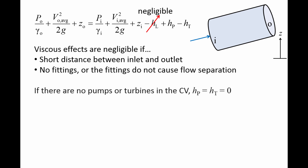Additionally, if there are no pumps or turbines in the control volume, the pump head and turbine head are zero. Under these conditions, the conservation of energy equation tells us that the total head at the inlet and outlet are approximately the same. If the density does not change significantly from the inlet to the outlet, the specific weight at the outlet equals the specific weight at the inlet.